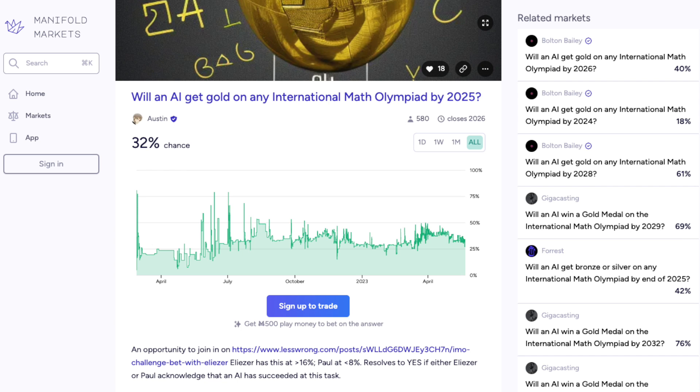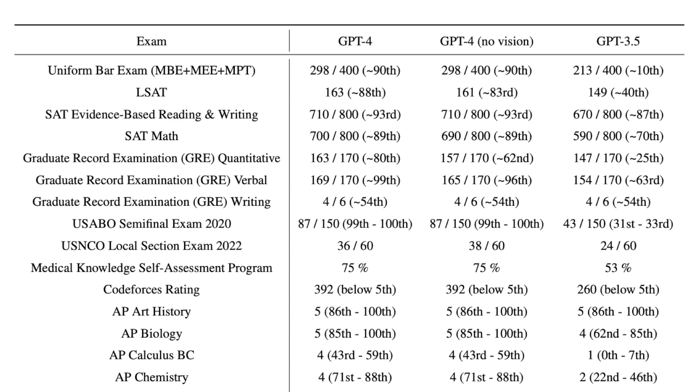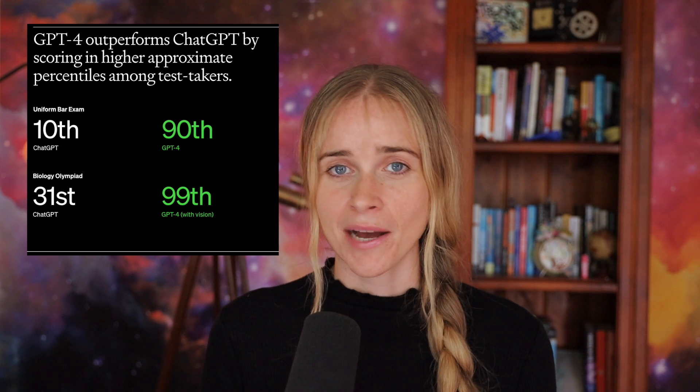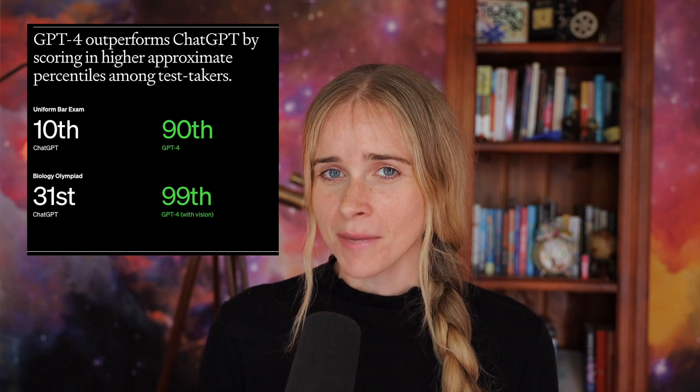Bets are on, literally, for if and when one might succeed. GPT-4 is paraded around as having already aced many other exams, including the SAT and the Biology Olympiad, but it might never ace the IMO because ChatGPT is actually not very good at math.